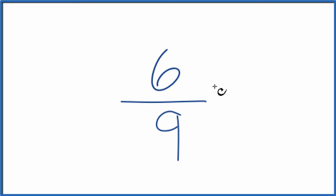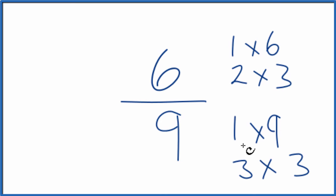To do that, we need to find a factor that goes into 6 and 9. We're looking for the greatest common factor. So these are the factors of 6 and 9. And the greatest common factor between 6 and 9, that's going to be 3.